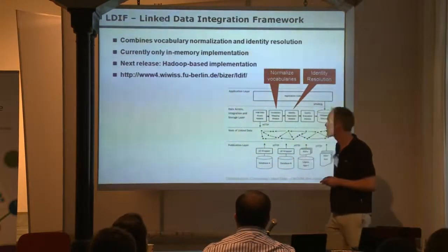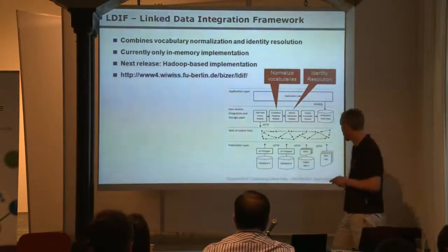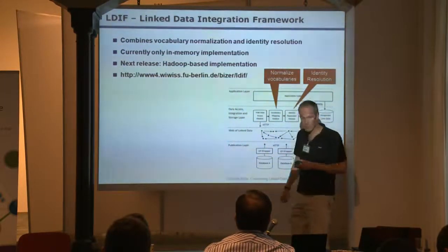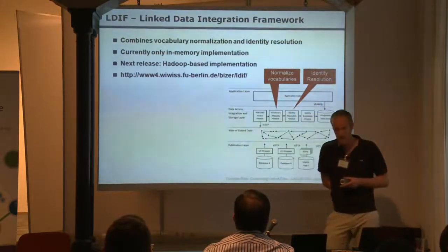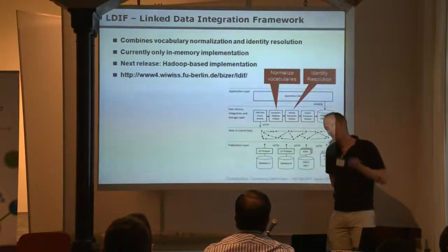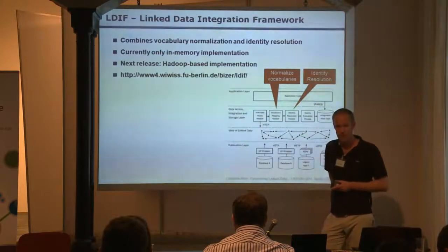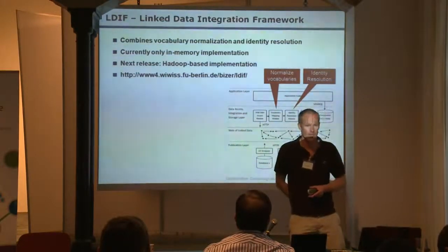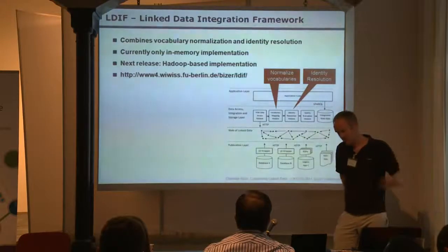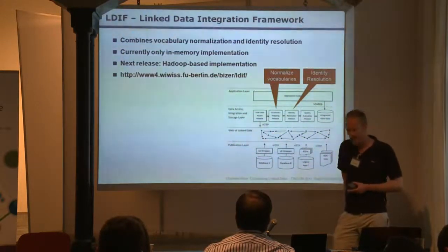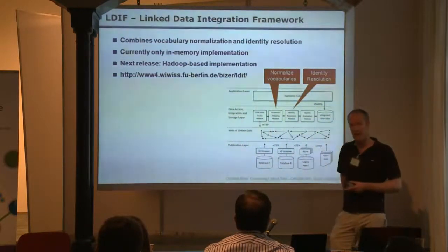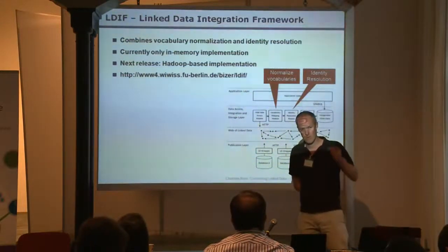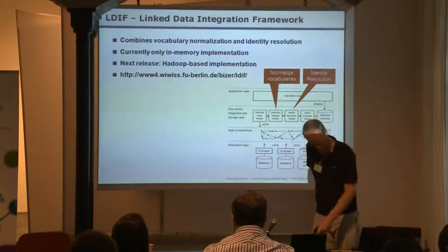Another tool that combines the functionality of the others has just been released: a linked data integration framework which allows you to normalize vocabulary and do identity resolution. Currently there is only an in-memory implementation, but within the next one or two months there will be a Hadoop-based implementation which will scale to the large amounts of data you actually want to integrate. If the web of data is 26 billion triples big, you need tools that can scale to that size — going through all the data and figuring out which data is about people, which is about books.